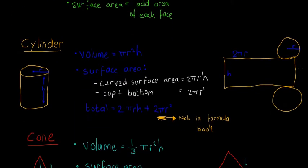Moving on to the cylinder. The volume of a cylinder is pi r squared h — that's in your formula book. The surface area is broken into two parts: the curved surface area around the side, and the top and bottom circles. The curved surface area is 2 pi r h, which is in the formula book. The top and bottom are two circles, each with area pi r squared, so 2 pi r squared total. The total surface area of the cylinder is 2 pi r h plus 2 pi r squared.